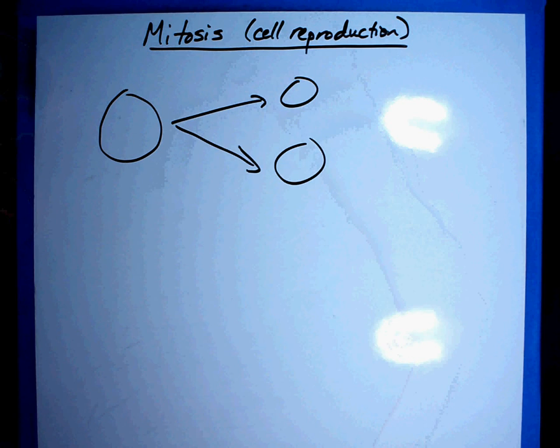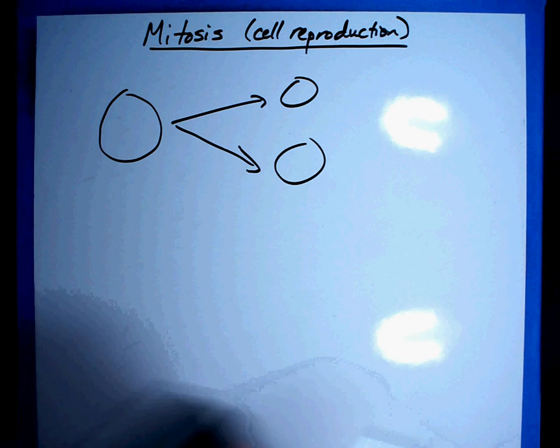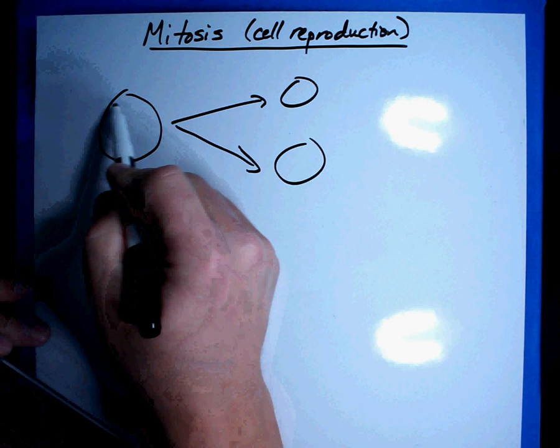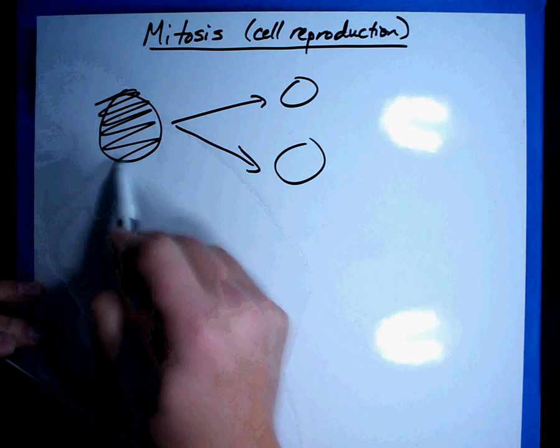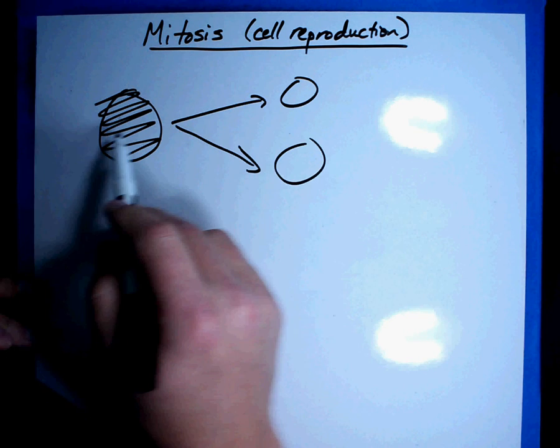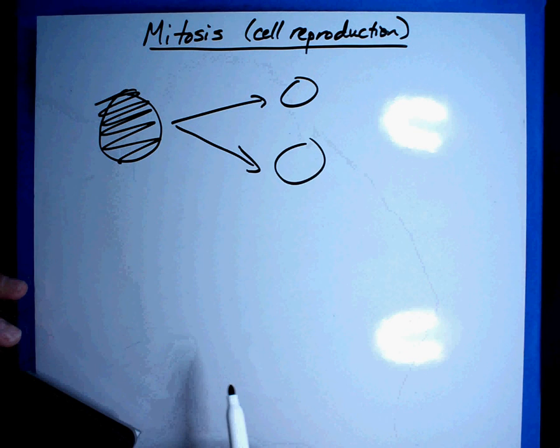The reason we want to do that is a couple of different reasons. Sometimes cells get very, very old. When they get really old, they don't function correctly and so we're going to have to do something to get rid of them and so we'll end up producing two new cells to take its place.